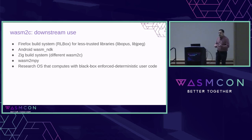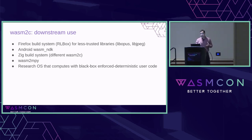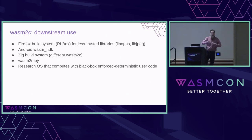The main production user of WASM2C right now is the Firefox build system. The way Firefox links with libraries like libopus and libjpeg is: compile the library to WebAssembly, run it through WASM2C, take the resulting C and build it into Firefox. This gives them safety — if there's a buffer overflow in libopus or libjpeg, those things are isolated. The cost of crossing this boundary is nanoseconds, making it an incredibly lightweight isolation mechanism compared to process isolation.